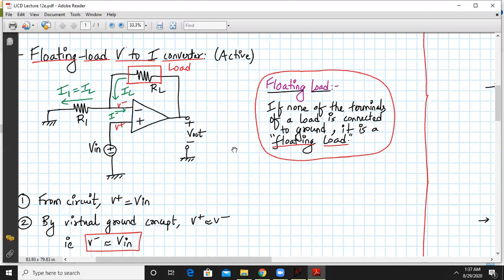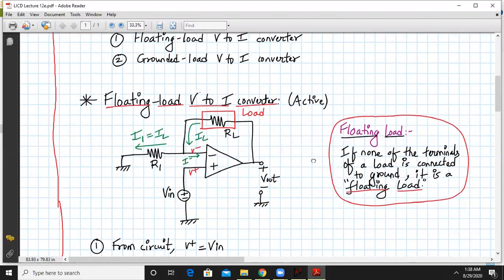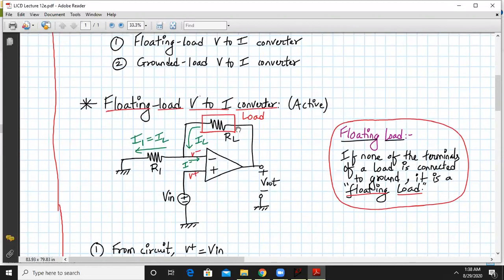This is also called Active Floating Load V2I Converter. What do you mean by Floating Load? If none of the terminals of a load is connected to ground, then it is called a Floating Load. Let us consider this example. If you see, this is basically a non-inverting amplifier, but we are analyzing it as a Floating Load V2I Converter. Same circuit having two functionalities.